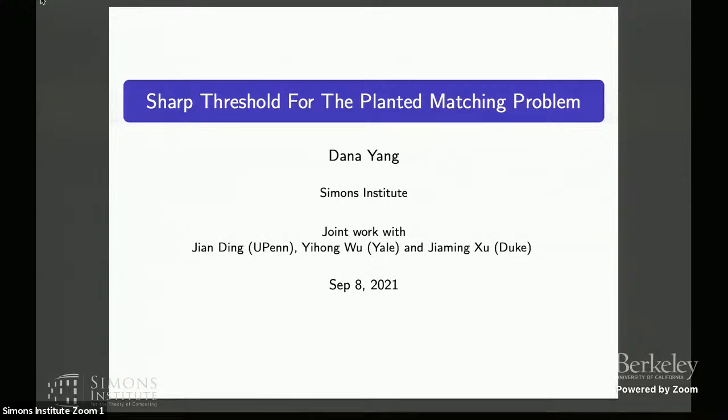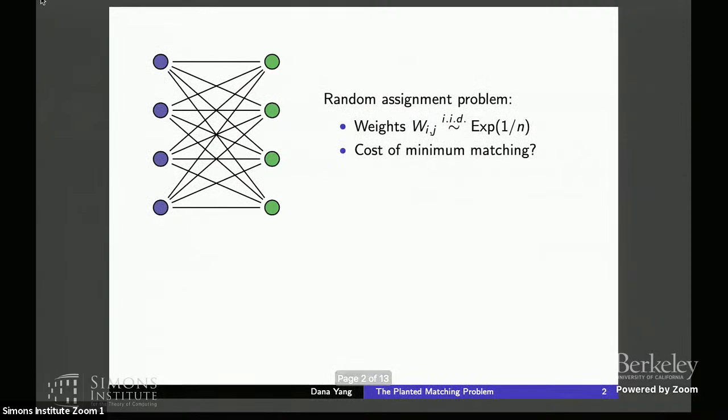So to start, let's consider a very simple matching problem. Suppose you have a bipartite graph. It is a complete weighted graph. So you have N vertices to the left and N vertices to the right, and the graph contains all N-squared edges. And suppose there are edge weights or costs associated with each edge, and these edge weights are distributed by the exponential. So the question is, what is the cost of the minimum weight matching?